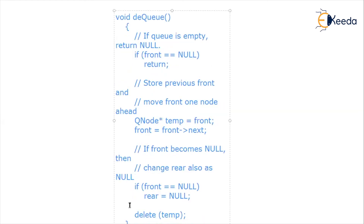For the dequeue operation, if front equals null the queue is empty and we return null. Otherwise, we store the current front node in temp, take temp's data, and update front to front's next node — effectively moving front one position ahead. If front becomes null after this, we also set rear to null since the queue is now empty. Finally, we delete temp to permanently remove the previously front node from memory.